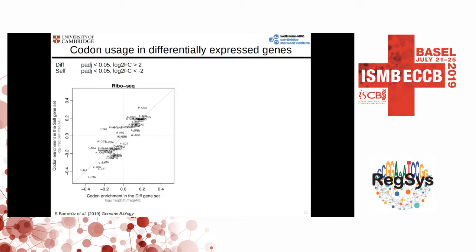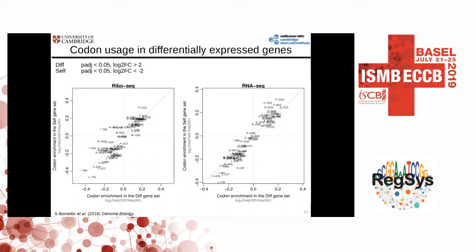We looked at the codon composition of the genes in each of these groups and compared it to the codon composition across all annotated protein coding genes. What we do see is that there are certain codons that are enriched in the diff gene set and also in the self gene set, so there is a high correlation between these two sets. There are also a group of codons that are depleted in both sets. This looks very similar if we do the same thing for the RNA-seq data. If we color this according to the third nucleotide of the codons, we can see that the codons that end with an A or a T are depleted in both gene sets, and those with a C are enriched in both gene sets.